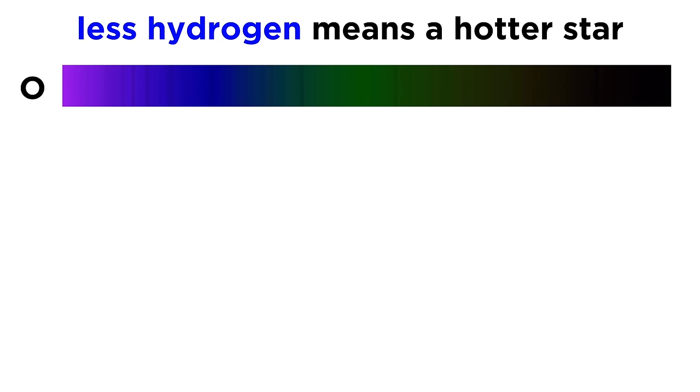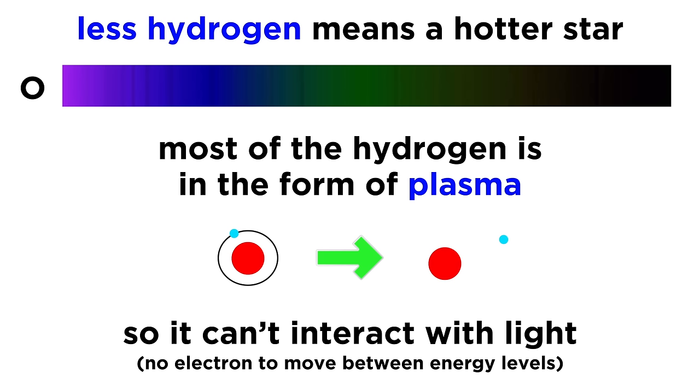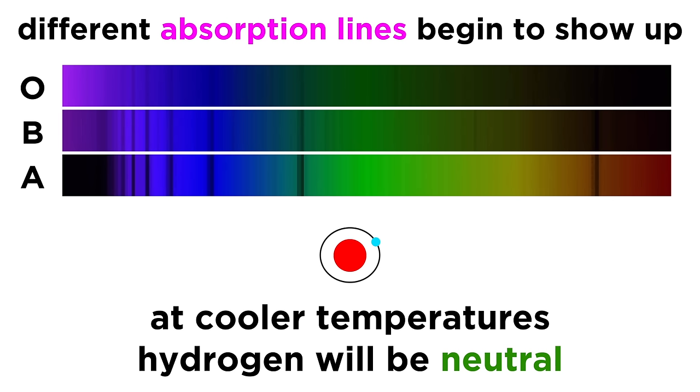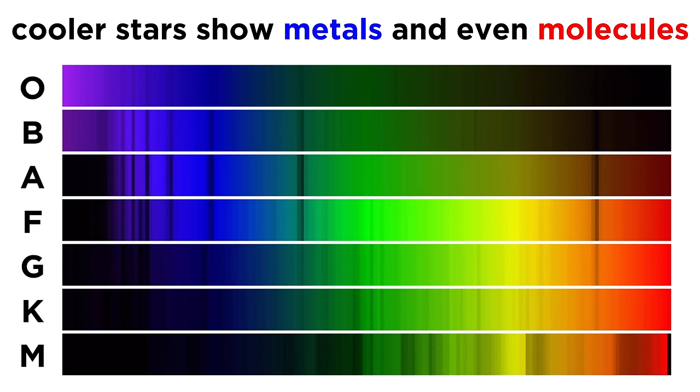The hottest stars, O stars, show very little hydrogen, because most of the hydrogen is without an electron, and thus can't absorb and emit light. Helium is still able to retain one or both electrons, and thus we do see emission correlating with helium. Cooling down a little with A stars, suddenly hydrogen can hold on to an electron, so the spectrum changes. Getting cooler still, some bands show up that correspond with metals, like calcium.